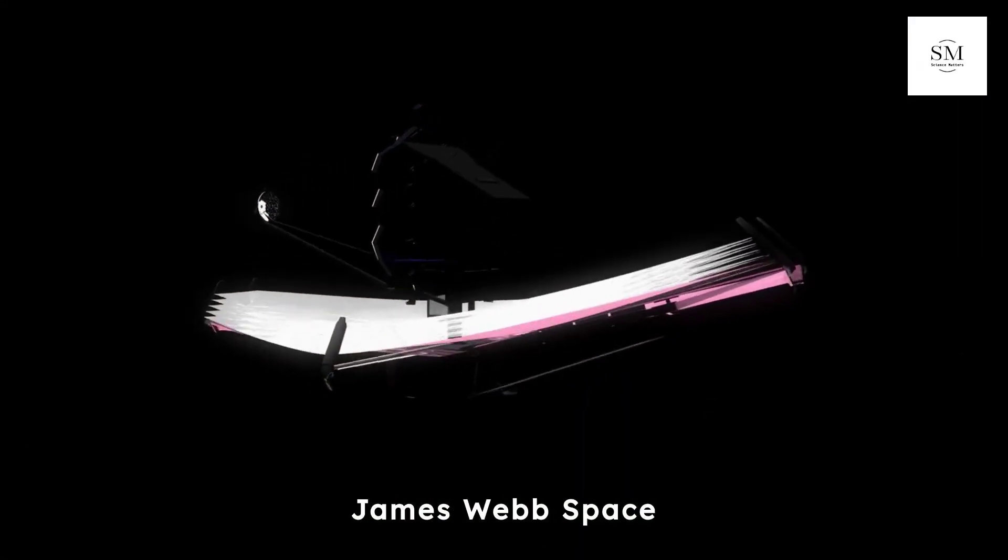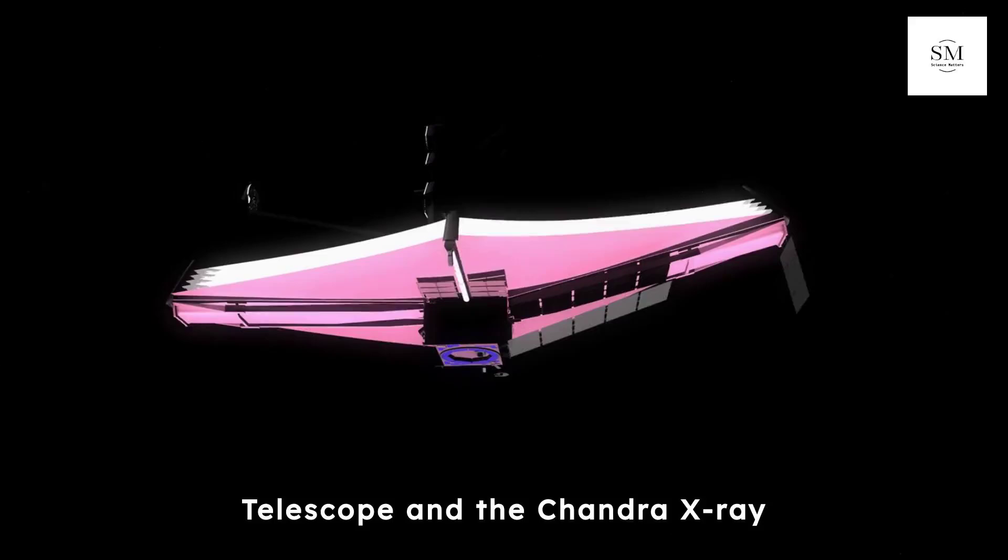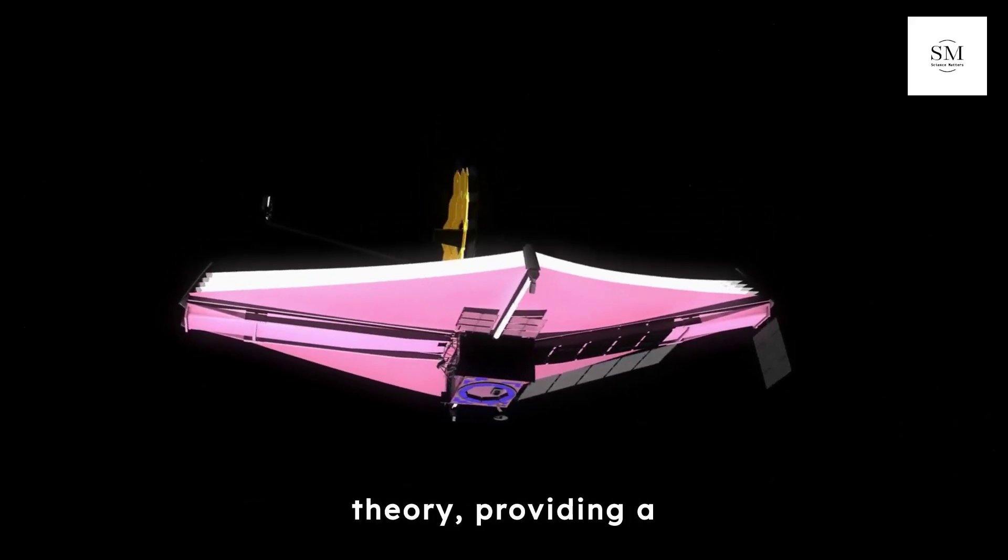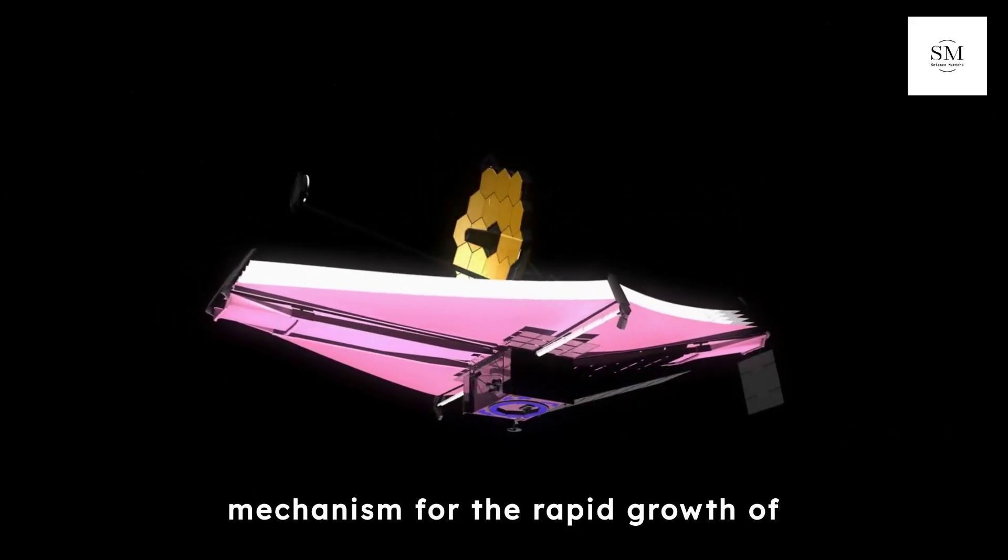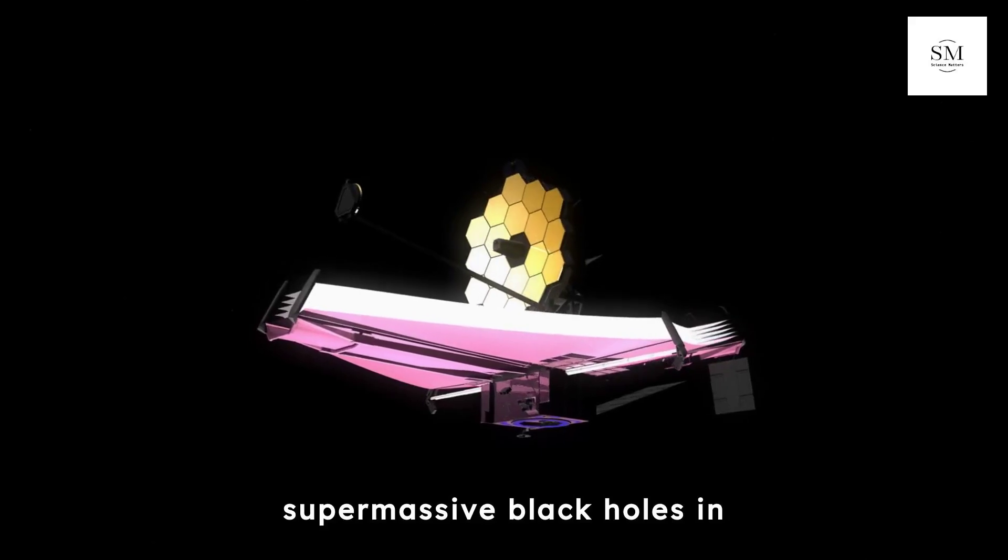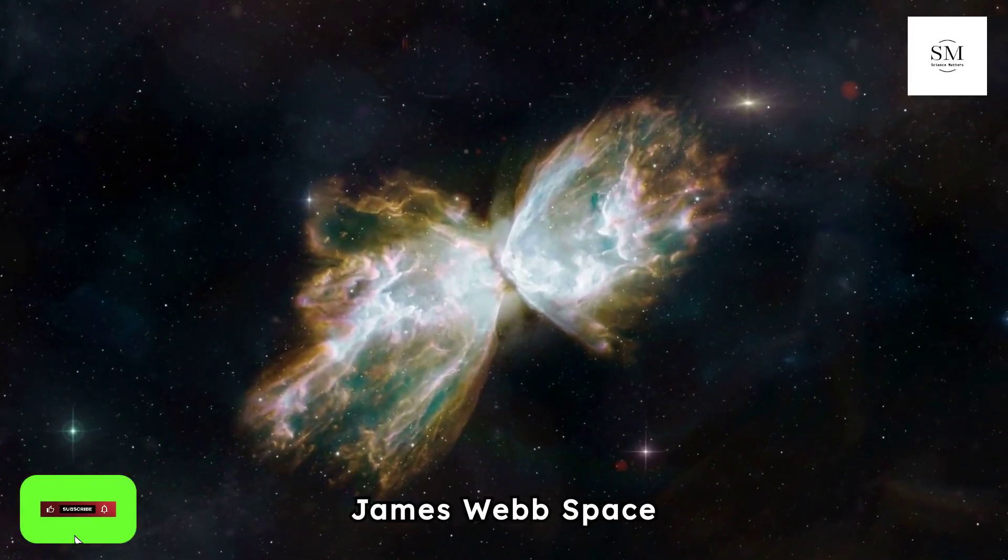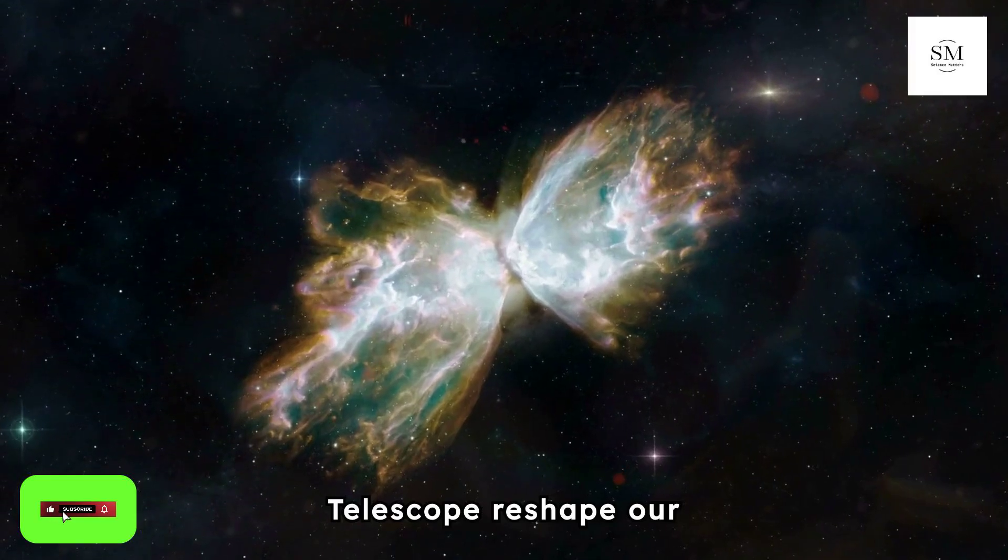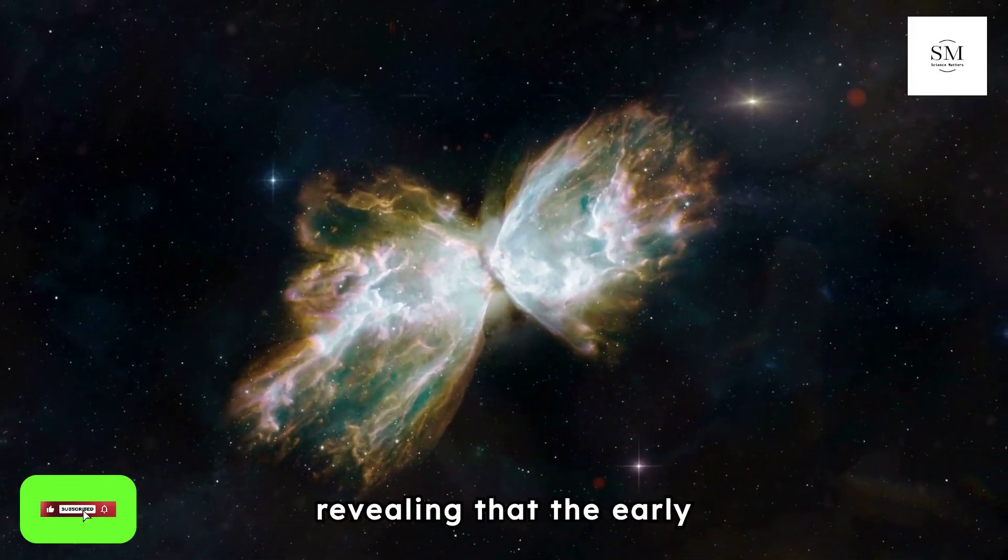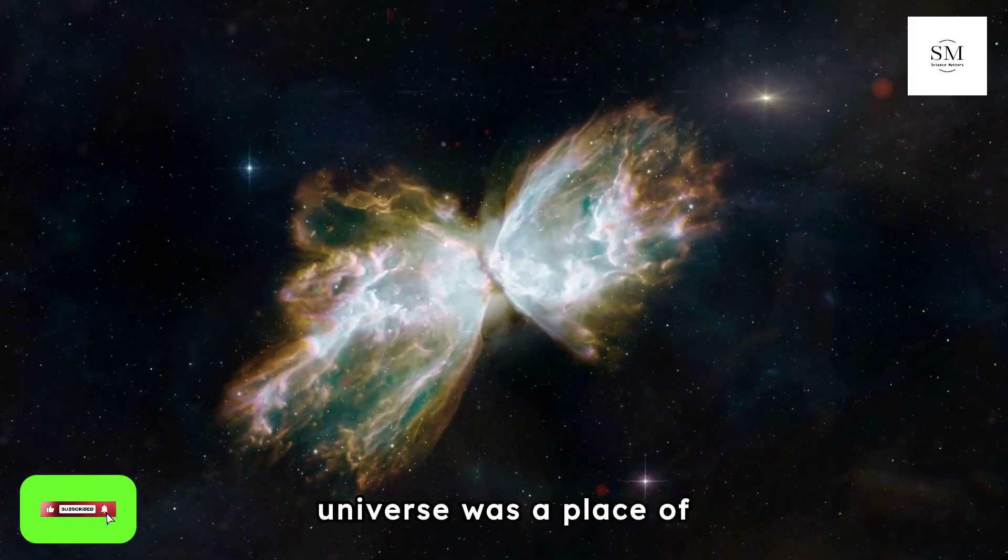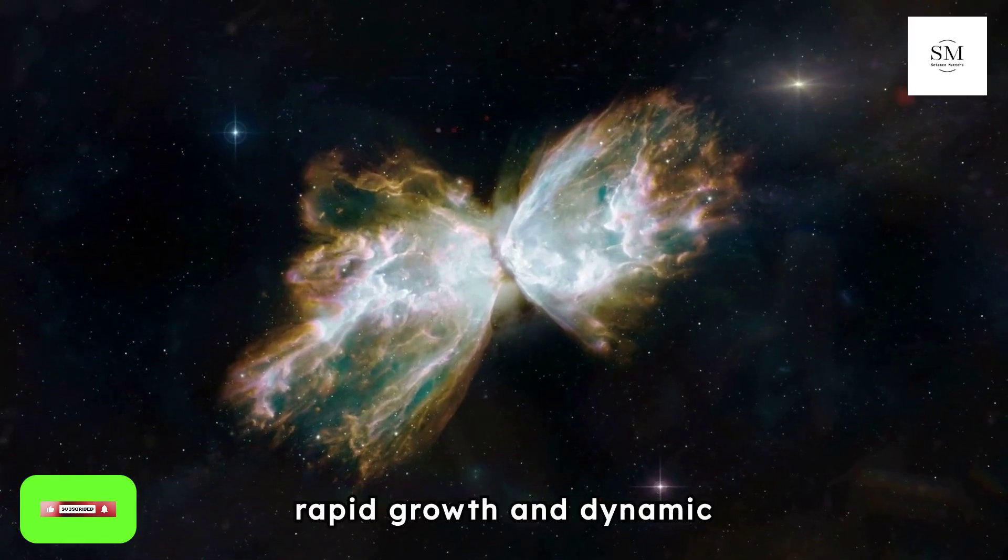Observations from James Webb Space Telescope and the Chandra X-ray Observatory support this theory, providing a mechanism for the rapid growth of supermassive black holes in the early universe. These insights from the James Webb Space Telescope reshape our understanding of the cosmos, revealing that the early universe was a place of rapid growth and dynamic changes.